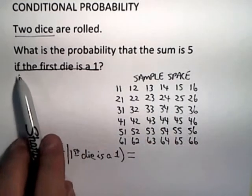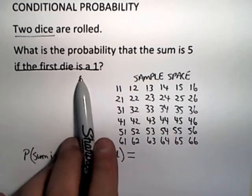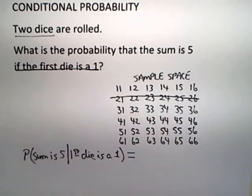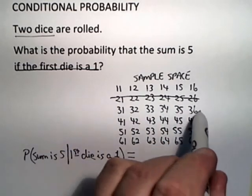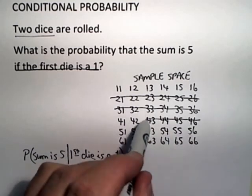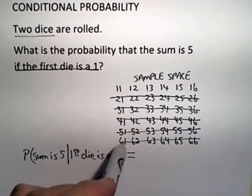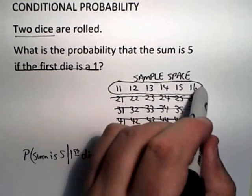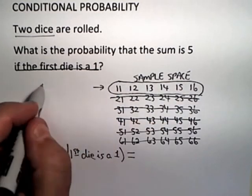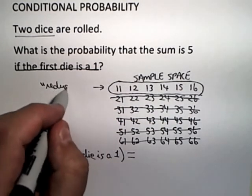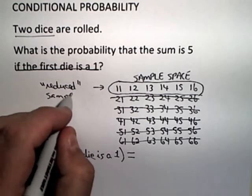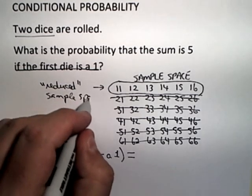So, the condition that reduces the sample space is that the first die is a 1. So, you're not at all interested in the die rolls that first die is a 2 or the first die rolls a 3 or a 4 or a 5 or a 6. So, you've reduced the sample space that you're interested in to these six equally likely outcomes. And that's what I call a reduced sample space.